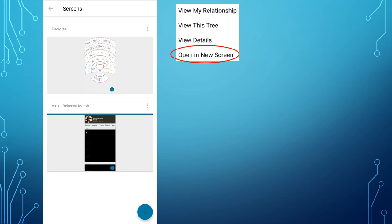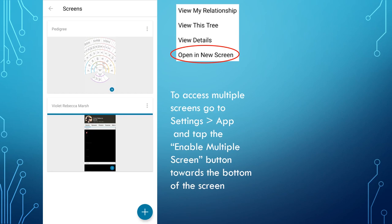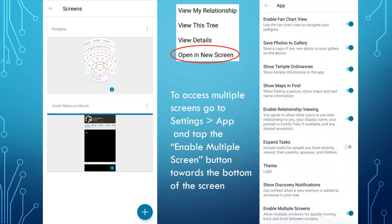But first you must enable multiple screens. This is done by going, as we did before, to Settings, App, and at the bottom, enabling Multiple Screens. Multiple screens can be especially useful when you want to go between screens quickly. The iOS version for multiple screens is a little more user-friendly than the Android platform.